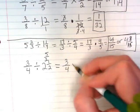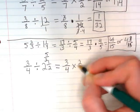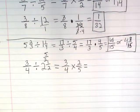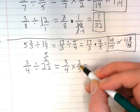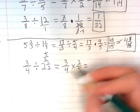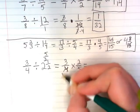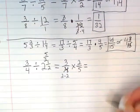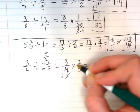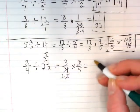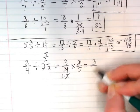3 fourths times 2 over 5. I do see something I can reduce before I multiply here. This 2 and this 4 look like they're going to be able to do something, right? If I'm going to change this 4 to its factors of 2 times 2, I can cross off one of those 2 to go with this one. And then I end up with 3 over 10.